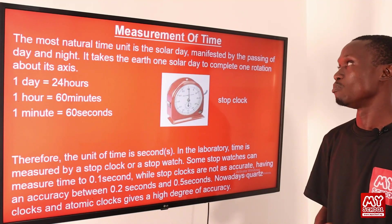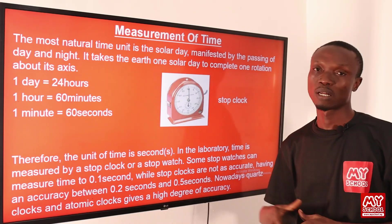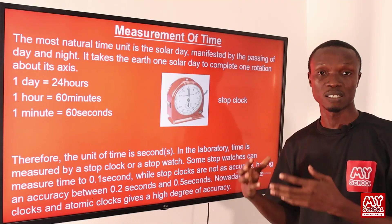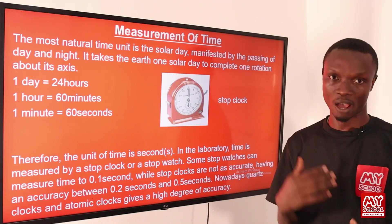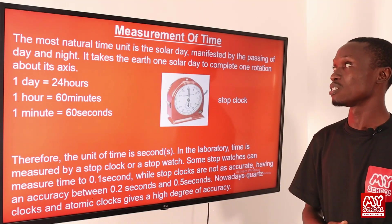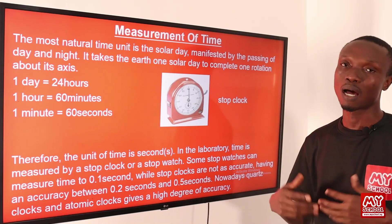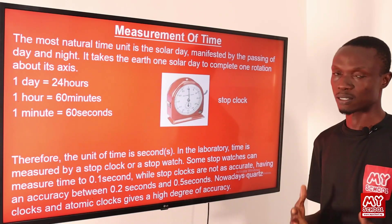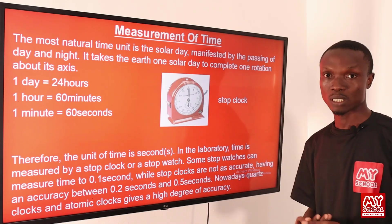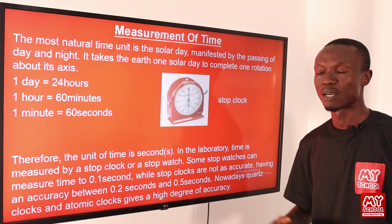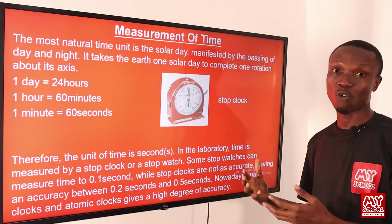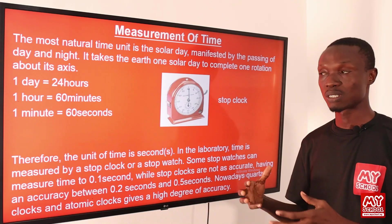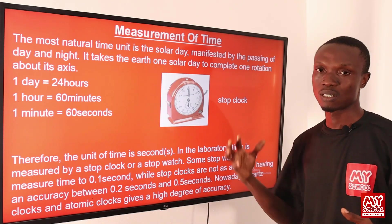We are going to be looking at the measurement of time. Before we dive into the lesson, let's first define what time means. Time is that in which events are distinguishable with reference to before or after. The most natural time unit is the solar time, manifested by the passing of day and night. It takes the Earth one solar day to complete one rotation about its axis. Time, being a fundamental quantity, has a fundamental unit which is seconds.